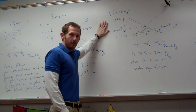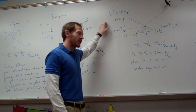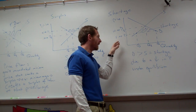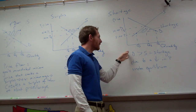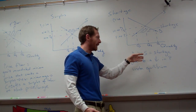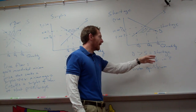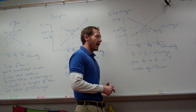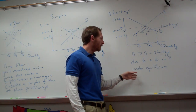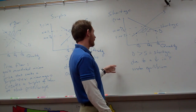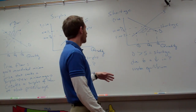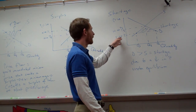The first thing we're going to talk about is shortage. On a simple supply-demand graph, a shortage is when demand is greater than supply. This is due to a decrease in price under equilibrium.